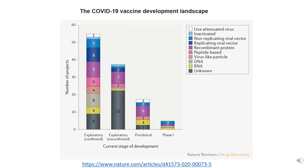As of April 12, 2020, there are about 115 vaccine candidates. These vaccine candidates are in various stages of development, including exploratory — either confirmed or unconfirmed — and several vaccine candidates are already in preclinical trials or in phase one clinical trials.